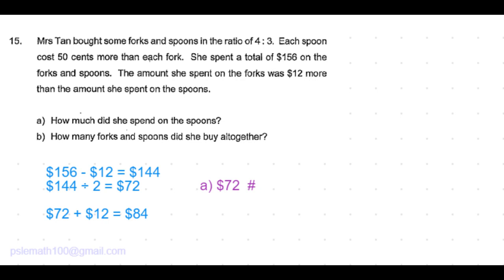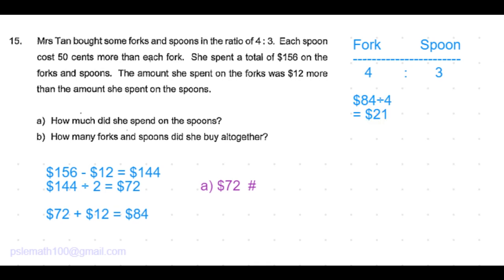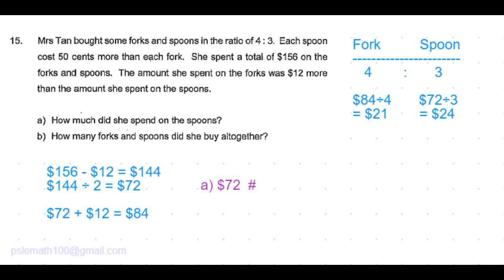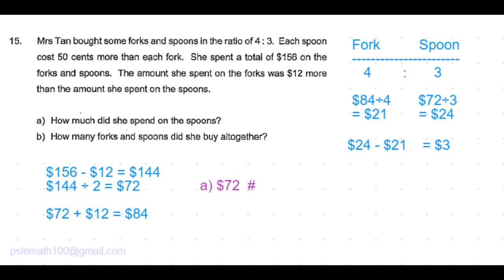We know that she bought forks and spoons in the ratio 4 is to 3. The amount of money she spent on 4 parts of forks is 84 dollars, so per part would be 84 dollars divided by 4, equal to 21 dollars. Similarly, she spent 72 dollars on 3 parts of spoons, so per part is 72 divided by 3, equal to 24 dollars. So 24 dollars minus 21 dollars equals 3 dollars — the amount spent more on one part of spoons than one part of forks.